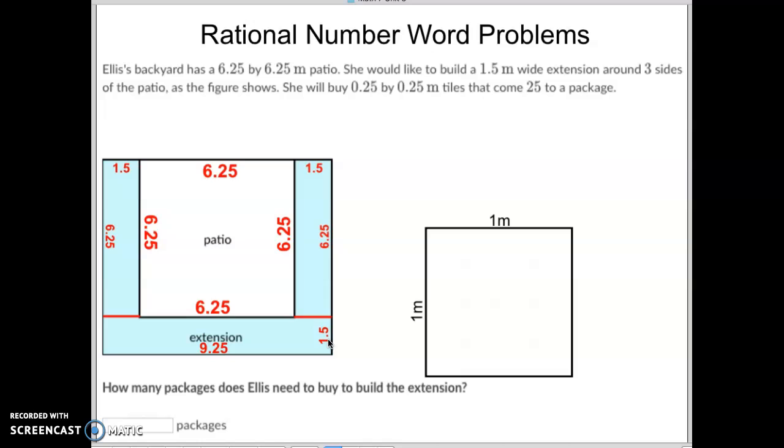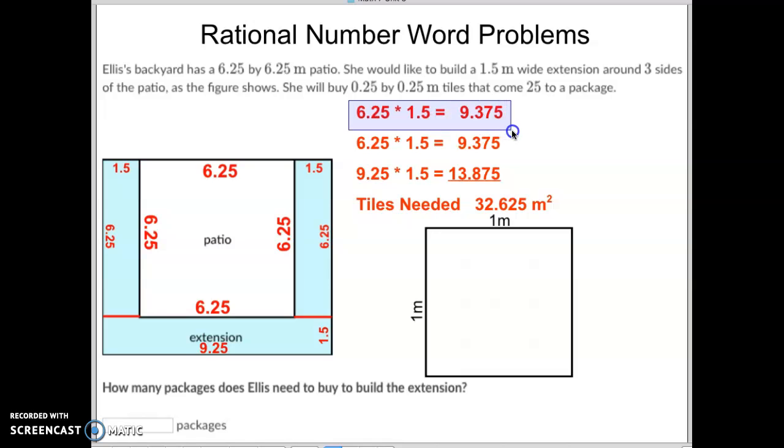Now, I wonder how many square meters she needs. So what we're going to do is we're going to take this side: 6.25 times 1.5 is 9.375. The other side is also 6.25 times 1.5, and then we have the long one, the 9.25 times 1.5, which is 13.875. If we add that all together, that is 32.625 square meters.